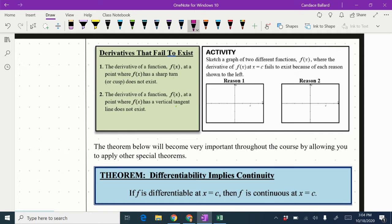So the first reason says that at a point where it has a sharp turn or cusp, the derivative does not exist. Actually, I'm going to draw two different ones on this one. Oh, here's the c value. I could draw this. I also could draw something that looks like this.